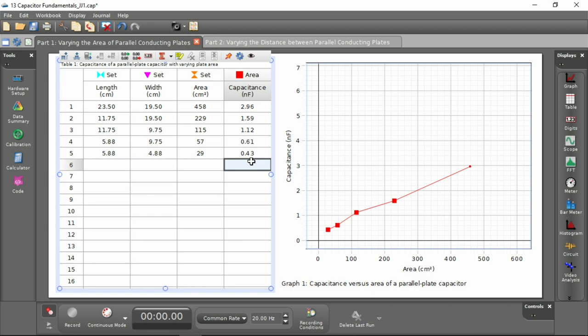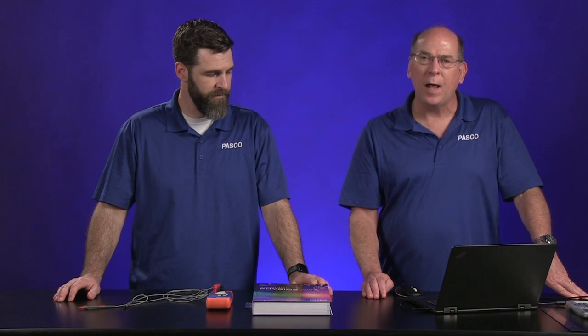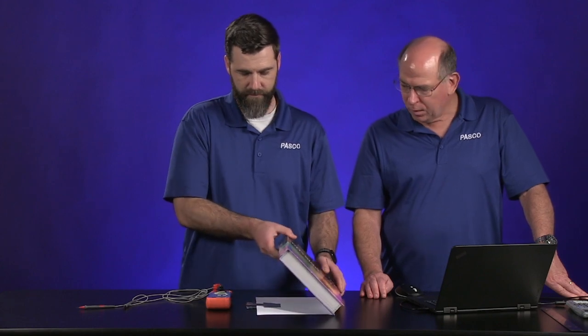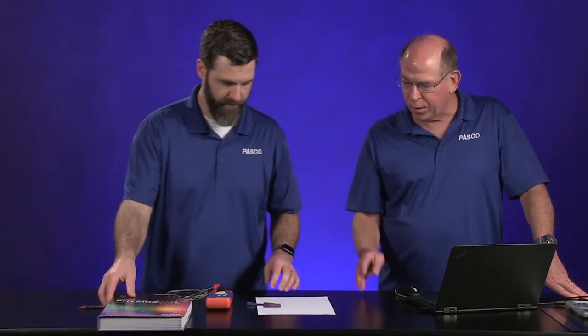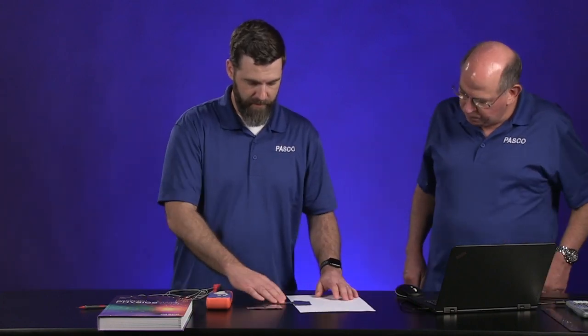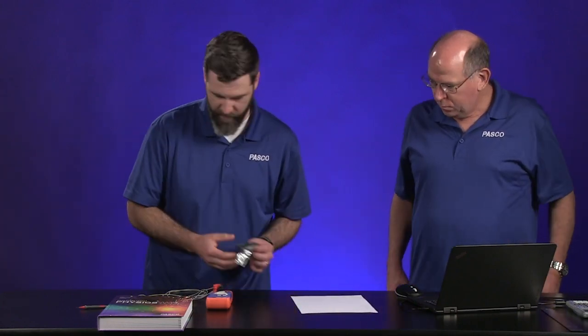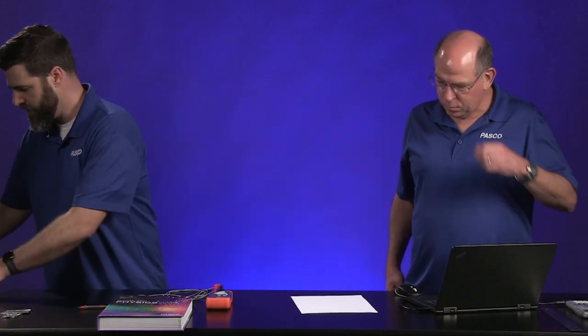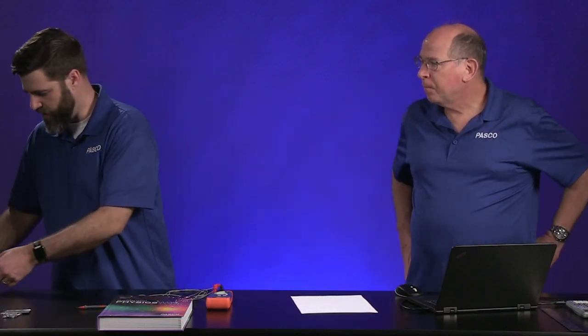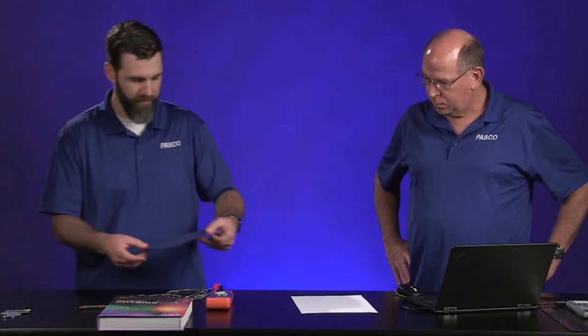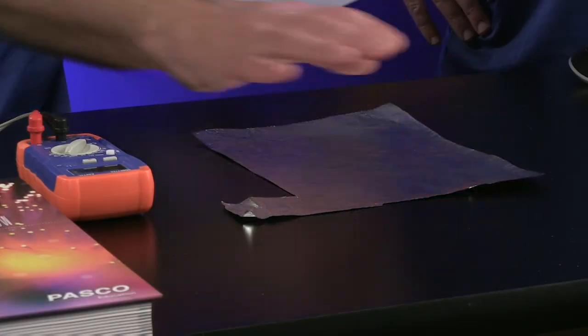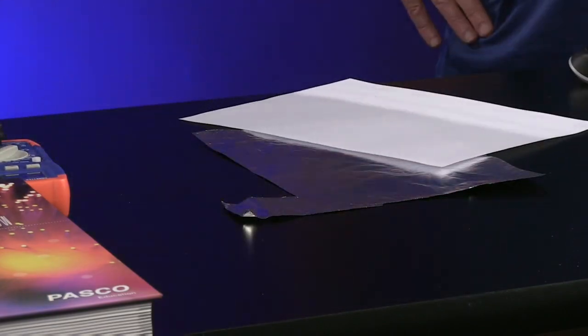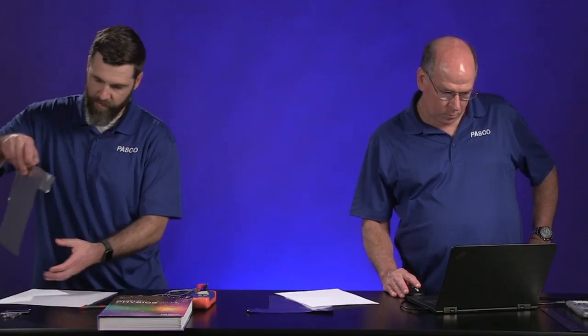Okay. So we have five data points. And so you can take this and do the analysis for the effect of area on capacitance. And so the other thing we're interested in was the distance between the two. So how are we going to change that? So let's get some new plates. I guess we could have reused those, but sometimes it's just easier just to start with some fresh ones.